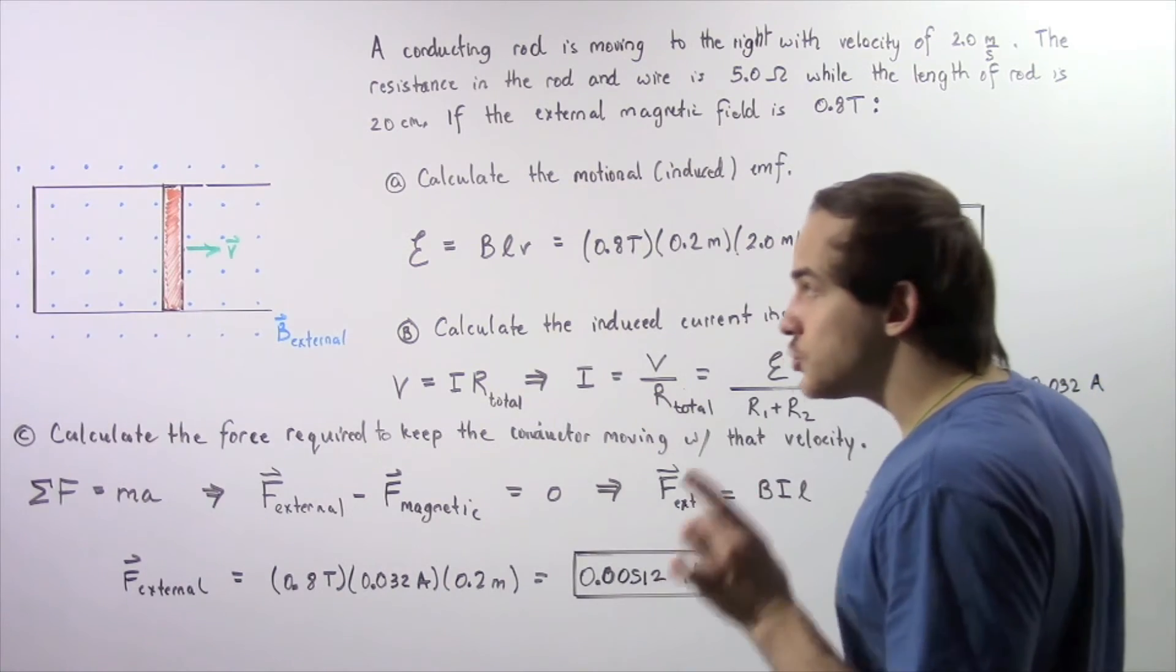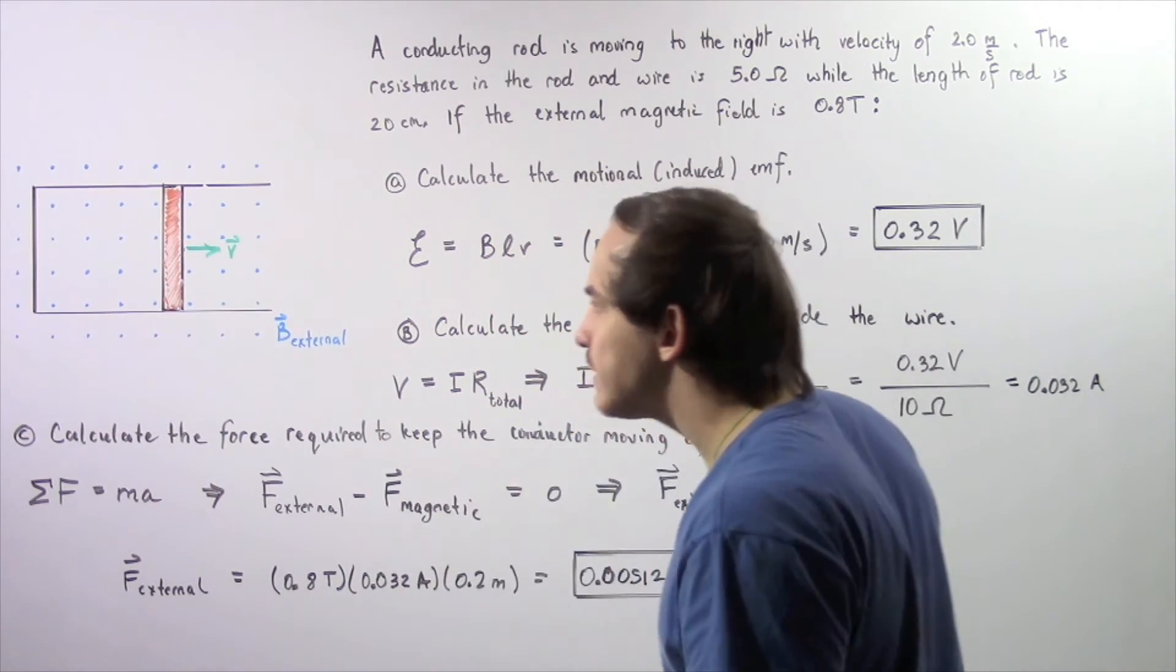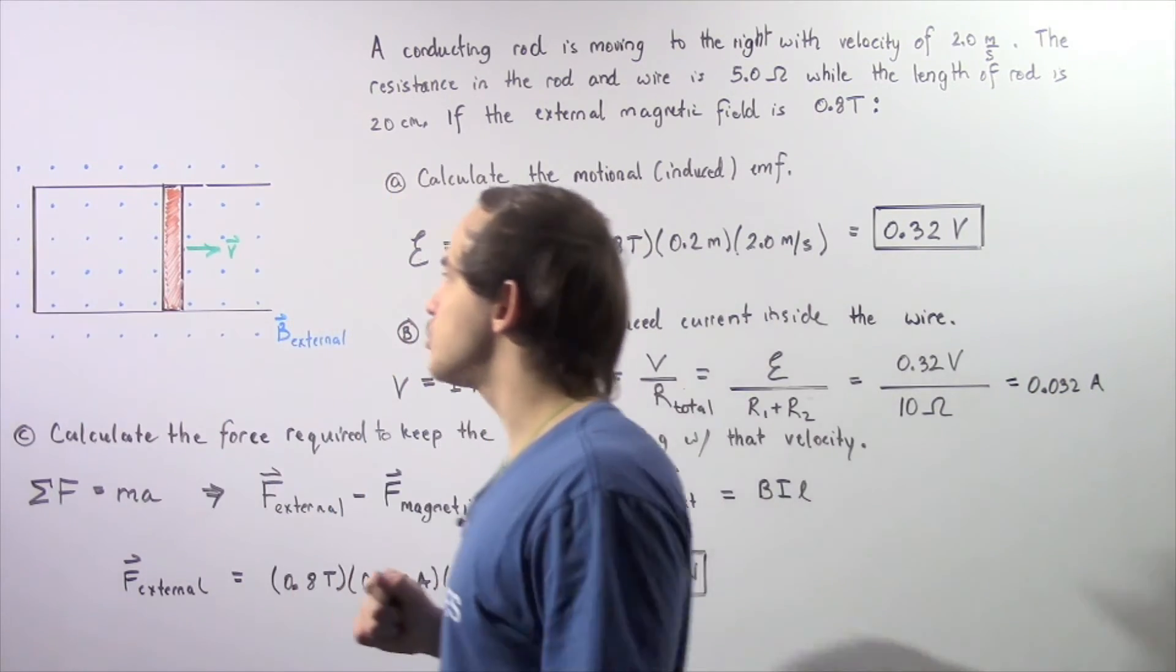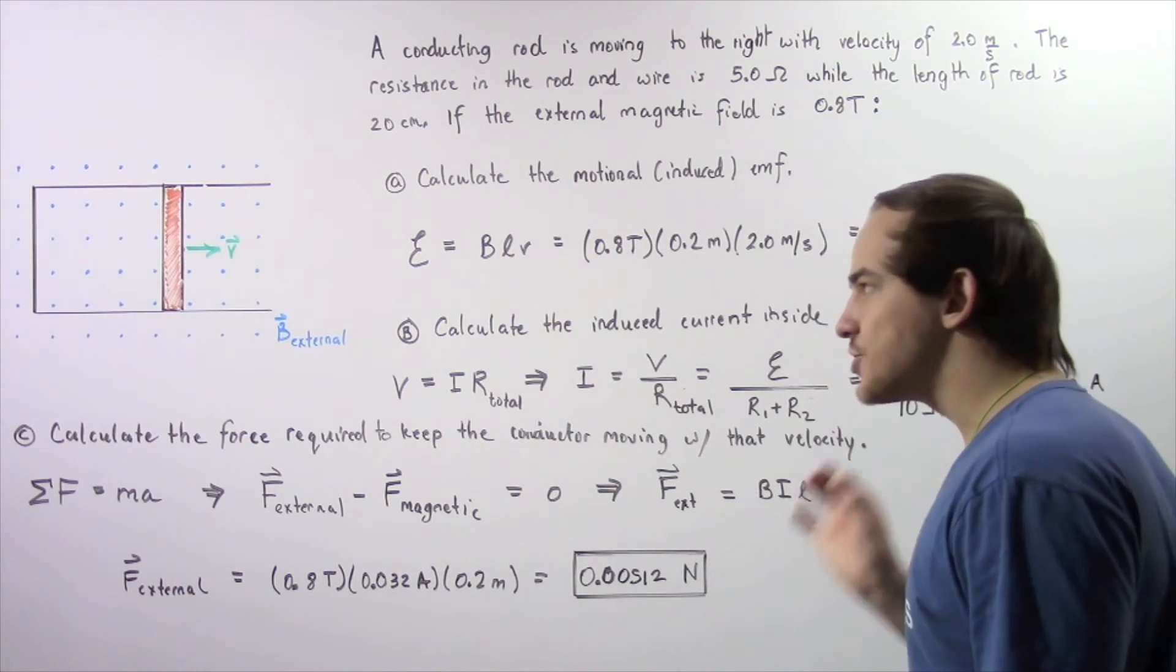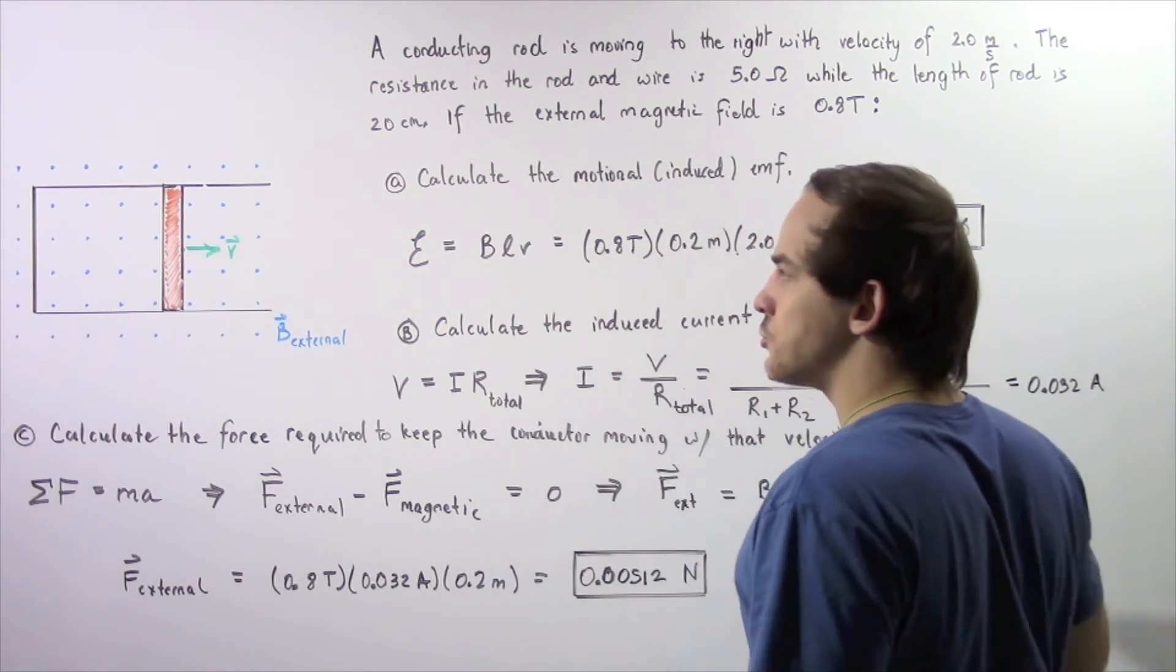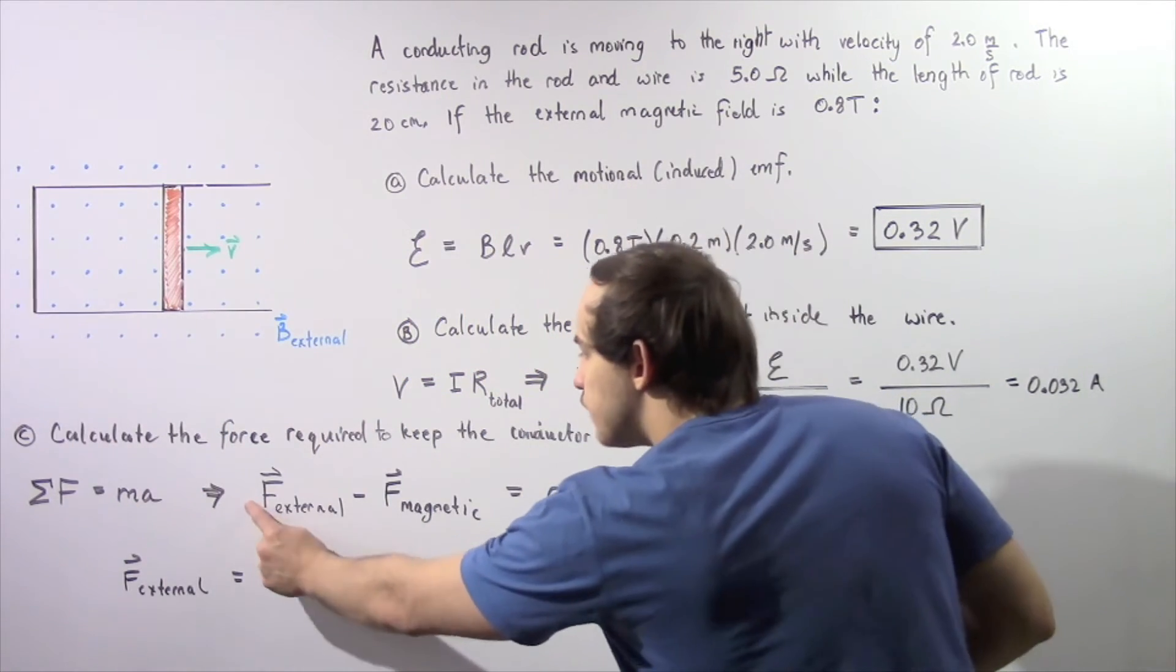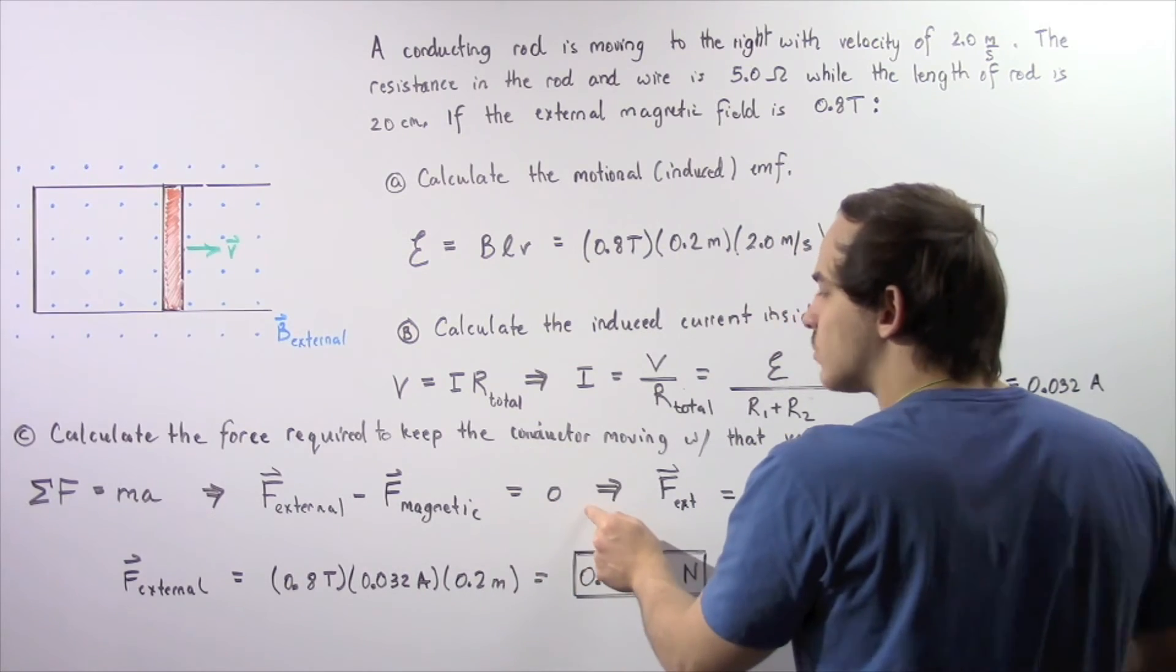Notice there are two forces acting on our rod. There's the net magnetic force, which points in a negative direction along our x-axis, and there's also that external force that we're looking for. Let's choose this direction to be positive, the other direction is negative.